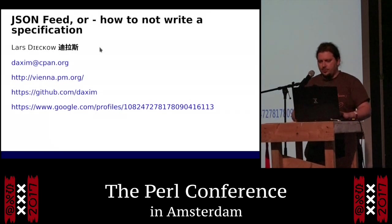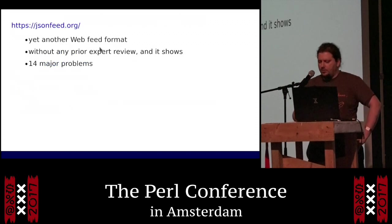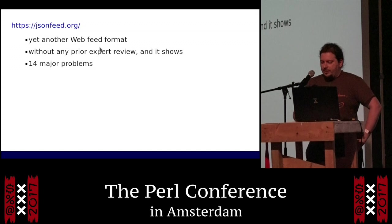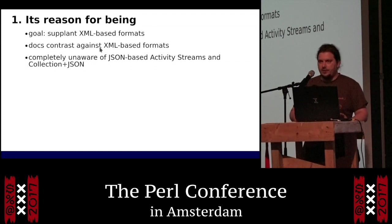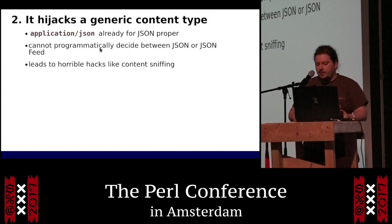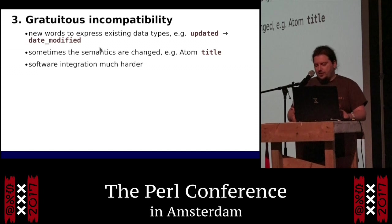Hi, I'm Daxim from Vienna.pm. JSON Feed: how to not write a specification. Three months ago, two authors published the specification for yet another web feed format. The release happened without any prior expert review, and it shows. In just five minutes we can identify fourteen major problems. Number one — its reason for being: the authors state their goal is to supplant XML-based formats, but they are completely unaware of Activity Streams and Collection+JSON, which are two JSON-based feed formats already in use. Number two — it hijacks a generic content type: the specification says application/json should be used, but that's already in use for JSON proper. You cannot programmatically decide between JSON and JSON Feed, meaning consumers have to resort to content sniffing.